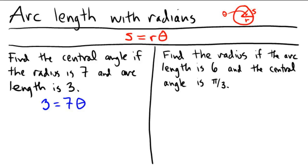So what are you going to do to isolate theta? Divide both sides by the number 7, and therefore theta is equal to 3 sevenths. Final answer.